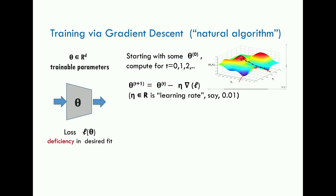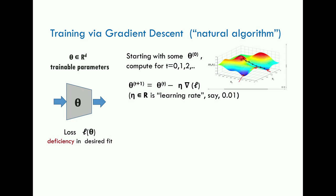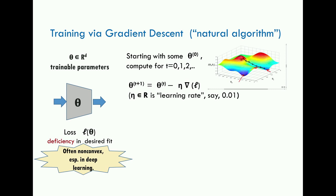The training algorithm is gradient descent — the meta-algorithm used in learning. You start with some initial value of theta, often random, and always make a small movement along the negative gradient direction, which is the direction of maximum local decrease. Eta is called the learning rate. Surprisingly, gradient descent is used in a non-convex setting, and although in a strict sense it doesn't always work, in real-life deep net training it seems to do pretty well.